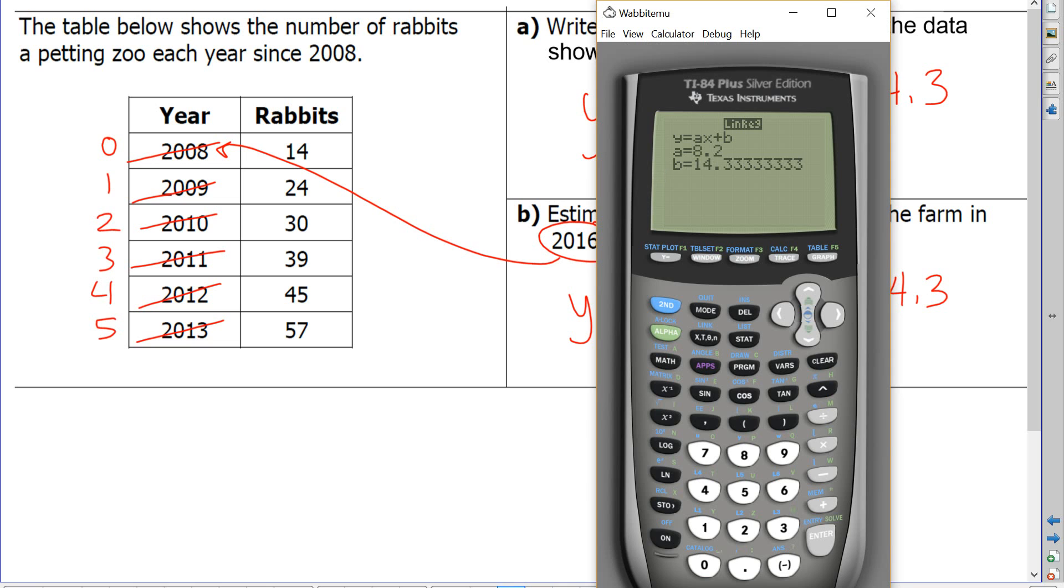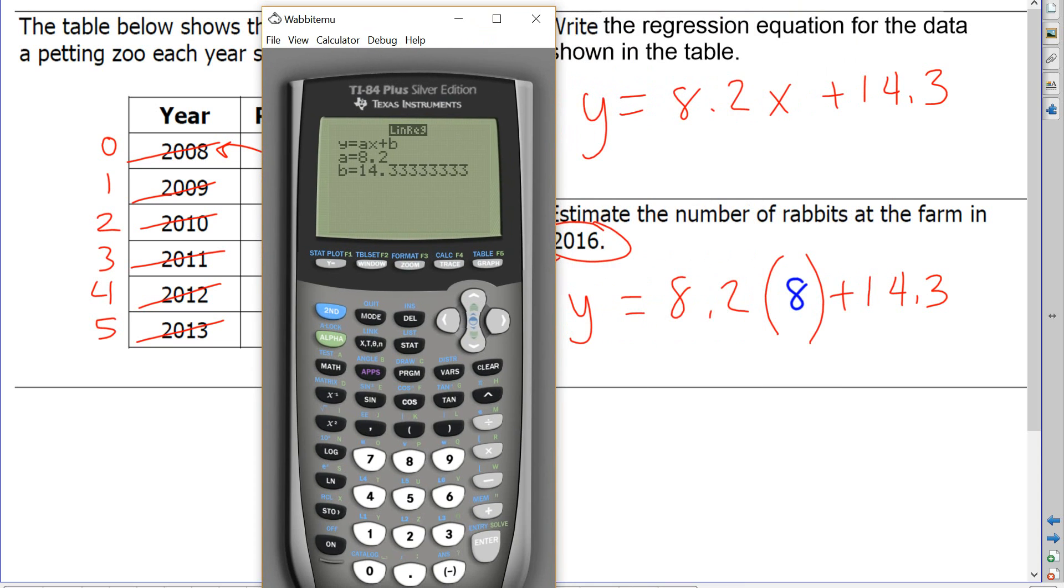So use your calculator. Clear out of this by pressing second quit. And then we enter 8.2, parentheses, eight, close parentheses, plus 14.3.